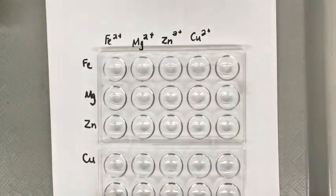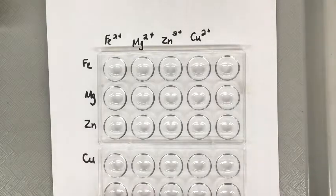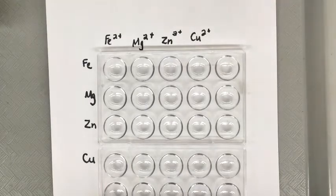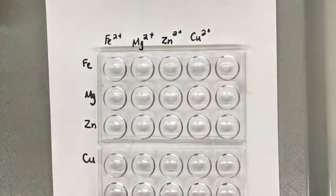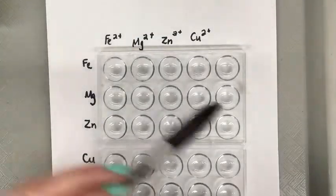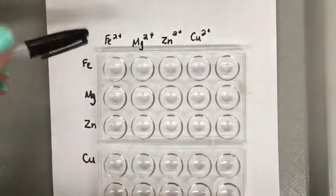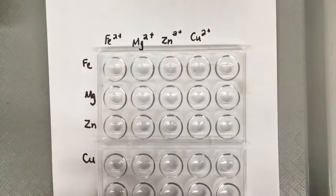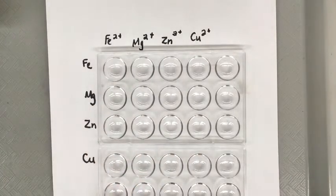The way you would test ions for their reactivity is you would react them with other solutions and also with the same metal ions. So if you take a look here, across the rows I'll put samples of each of those metals and then down the columns I'll put solutions that contain those ions and then we'll see which ones will have a reaction.